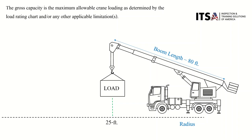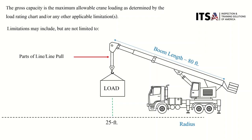Now there are some limiting factors as well. Limitations may include but are not limited to: parts of line or line pull, your load block or ball, rigging, or any other attachments. Just remember, you're only as strong as your weakest link. If any of these load handling devices cannot support the full weight of the load, then you're limited to that device.